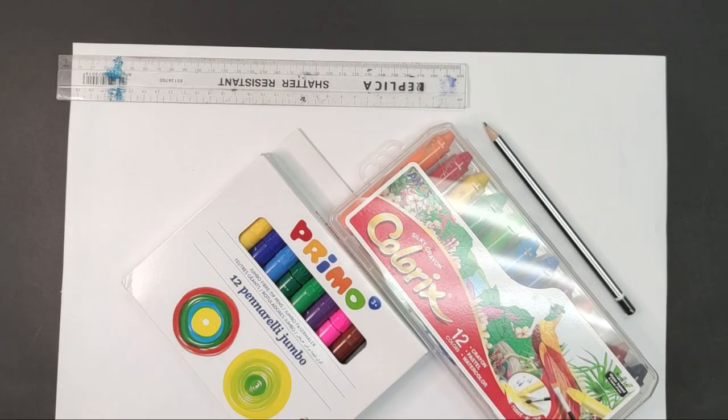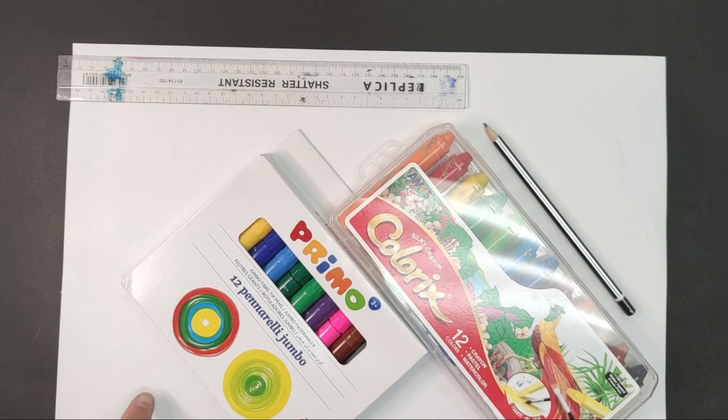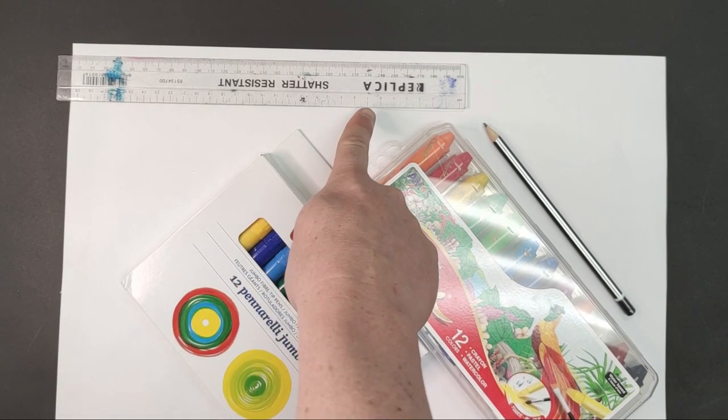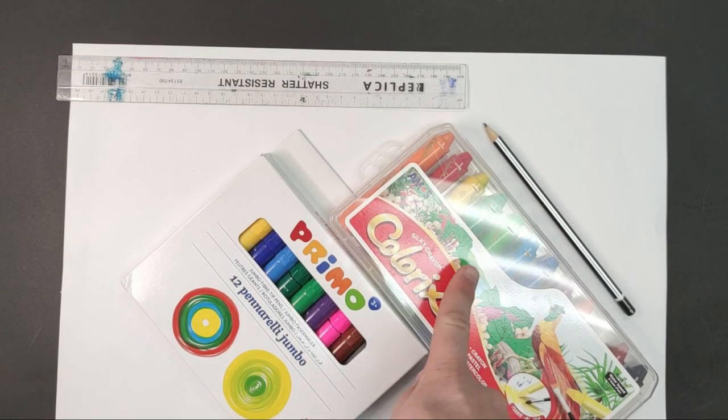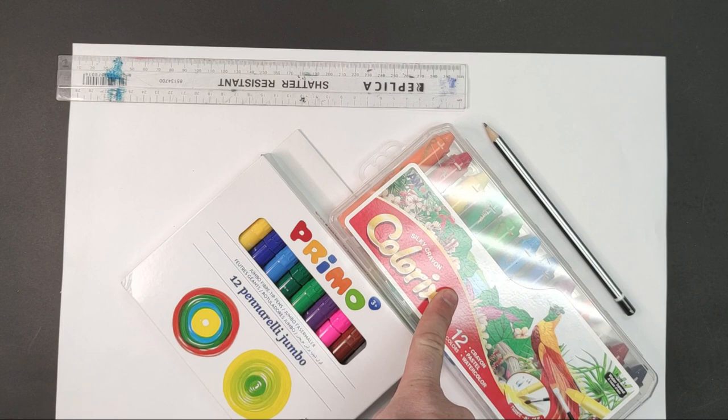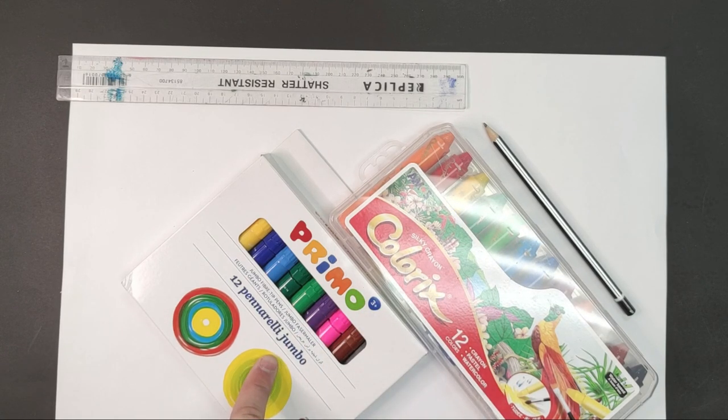For this project, you'll need the following: an A3 or A4 piece of white paper, a ruler, pencil, some colored wax crayons or colored pencils, or some colored markers.